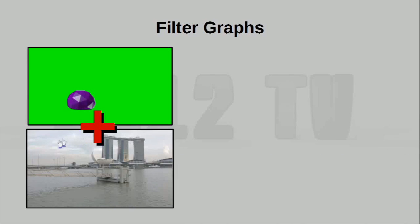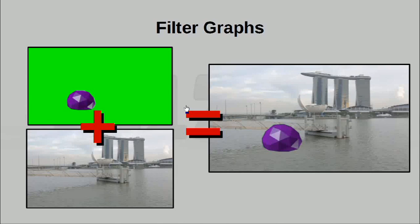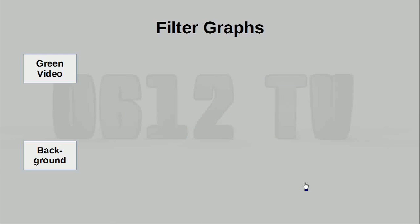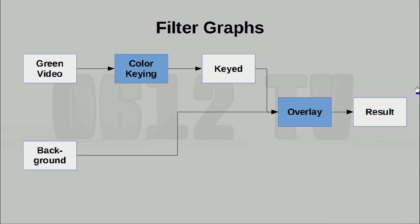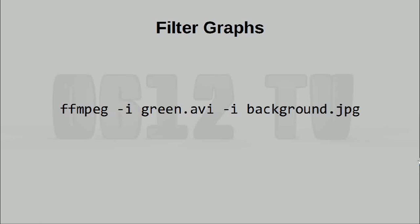Basically I have a static image of the background from the video you've been seeing, and I also have a little animation on a green background. This means we can actually do chroma keying — in other words the green screen effect — to stack these two videos on top of each other. Let's first try to visualize how we're going to do this. We have the green video as well as the background existing as two separate input streams. We're going to take the green video, perform color keying on it to generate a keyed version, and then use an overlay filter to stick the keyed video on top of the background.